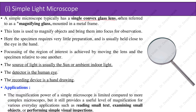A simple microscope typically has a single convex glass lens, often called a magnifying glass, mounted in a metal frame. The specimen requires very little preparation and is usually held close to the eye. Focusing is achieved by moving the lens and specimen relative to one another. The light source is usually the sun or ambient indoor light, and the detector is the human eye. The magnification power is limited compared to more complex microscopes but is useful for everyday applications such as reading small texts, examining small objects, or performing simple visual inspections.